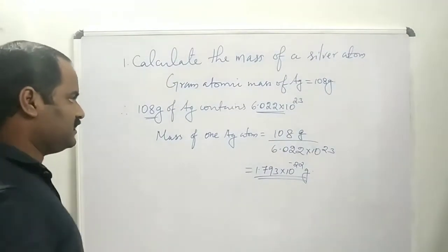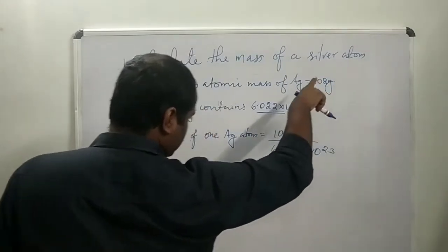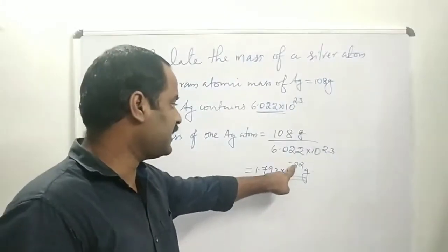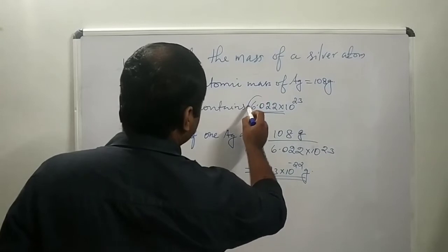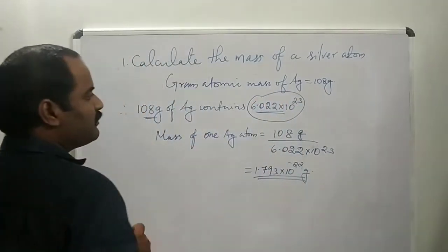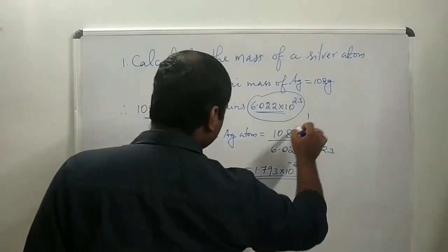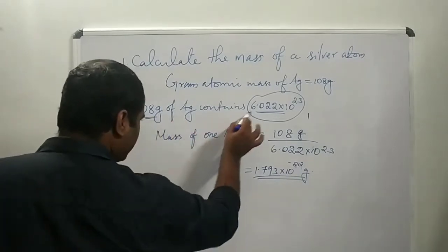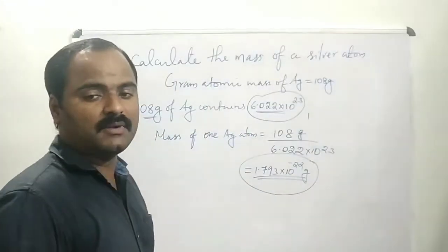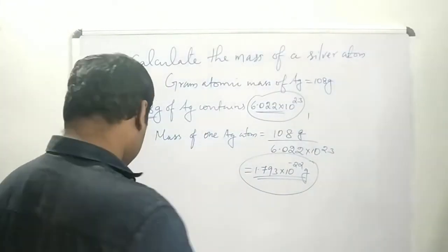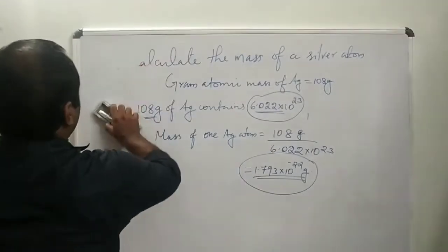So the mass of 6.022 × 10²³ silver atoms is 108 grams, and therefore the mass of one silver atom equals 108 divided by Avogadro's number, giving 1.793 × 10⁻²² grams. That is the answer. We can now move on to the second question.